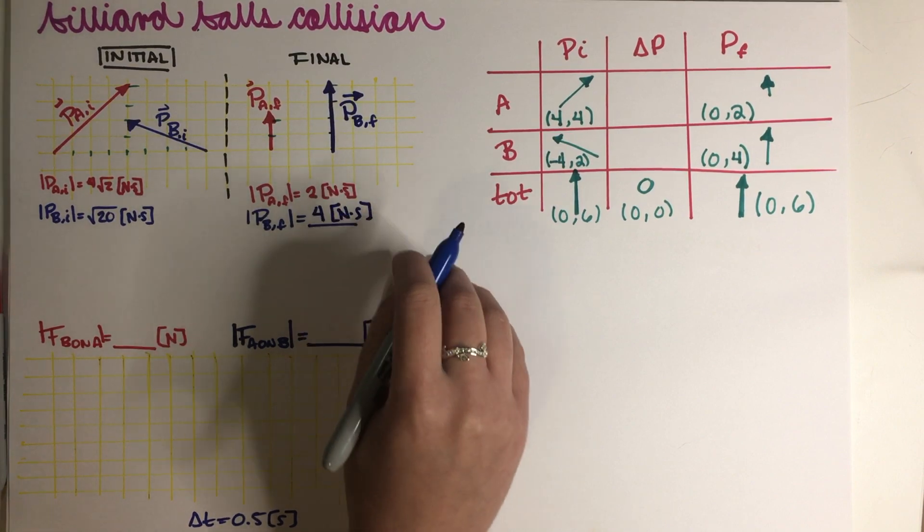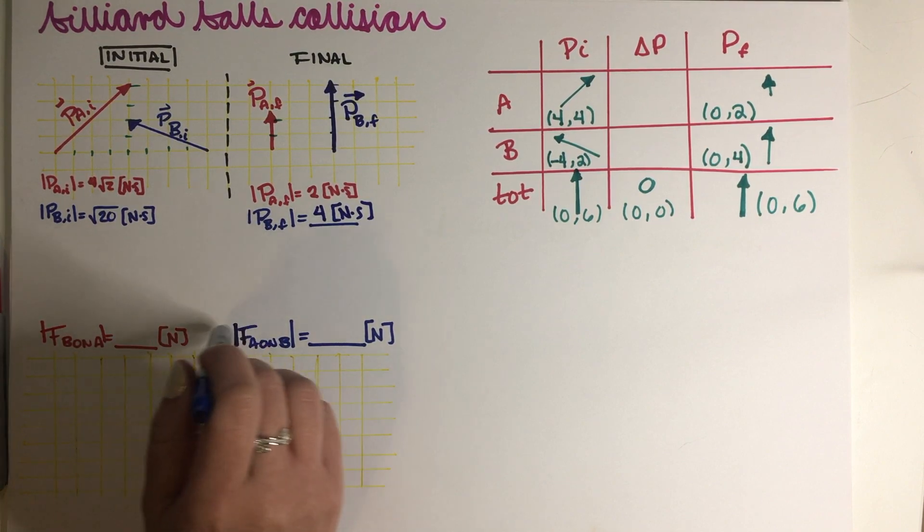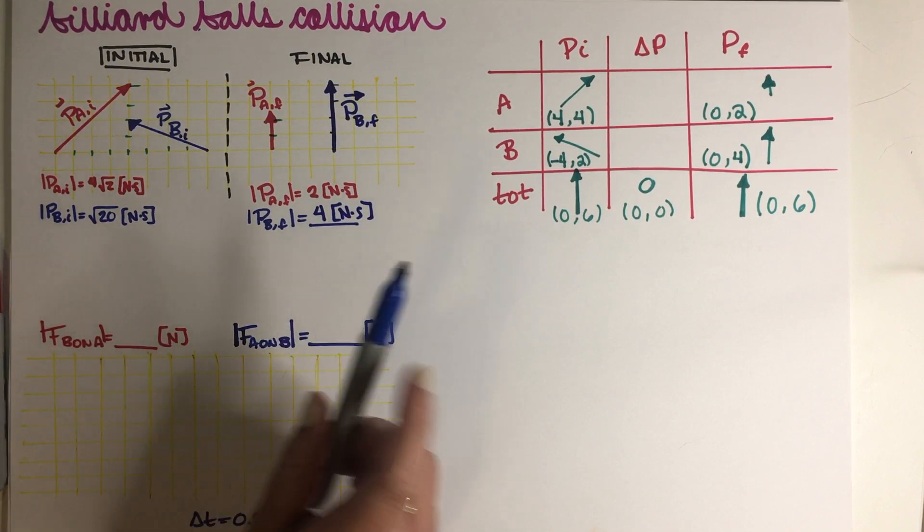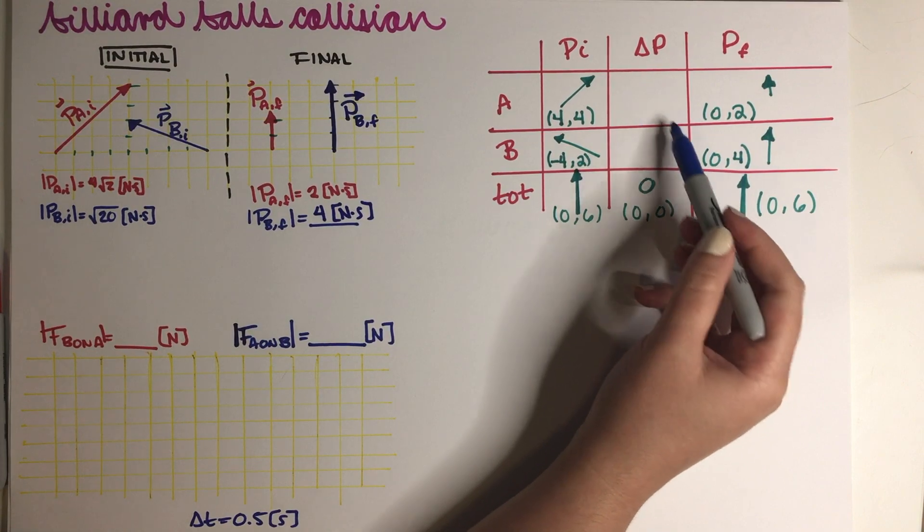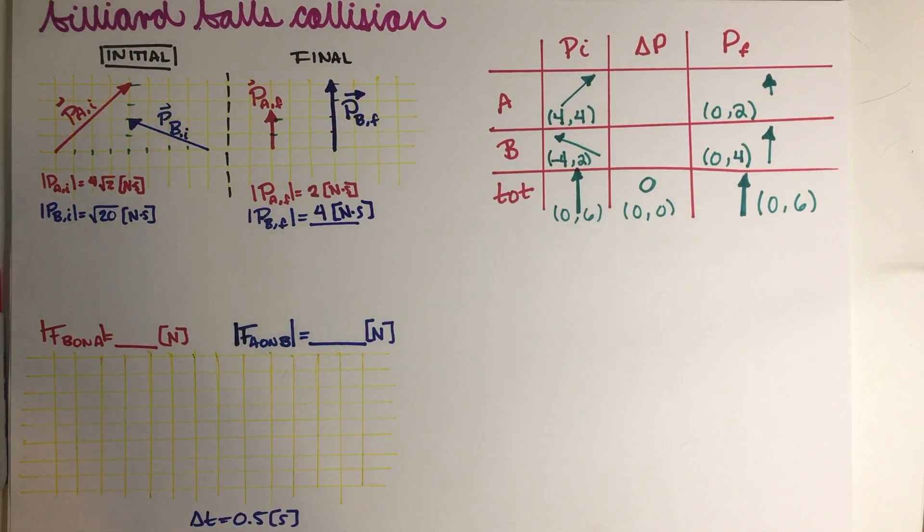So this is our final answer. So now we have to figure out the force that B puts on A and the force that A puts on B. And for that, we need to figure out this part of our momentum chart. So let's just go ahead and do that first. And then I'll explain why this is important.